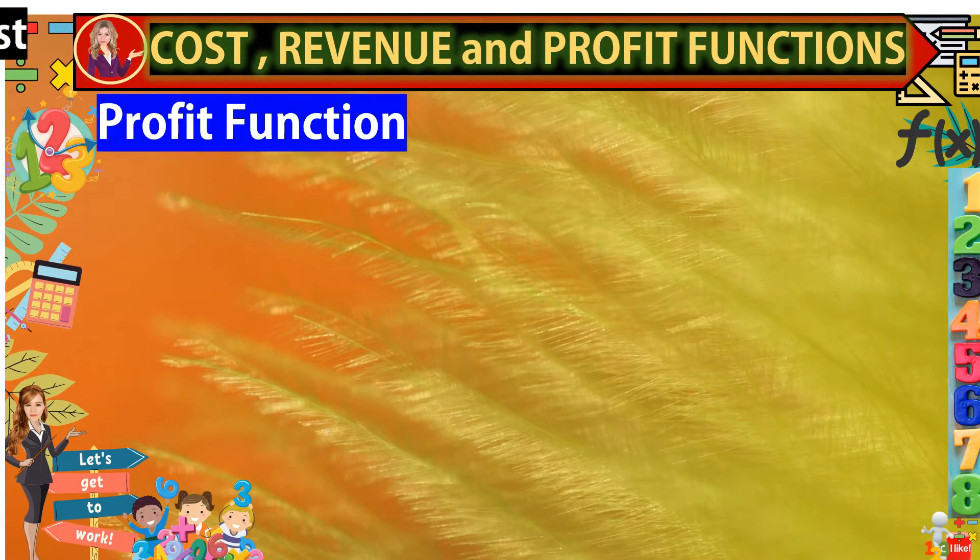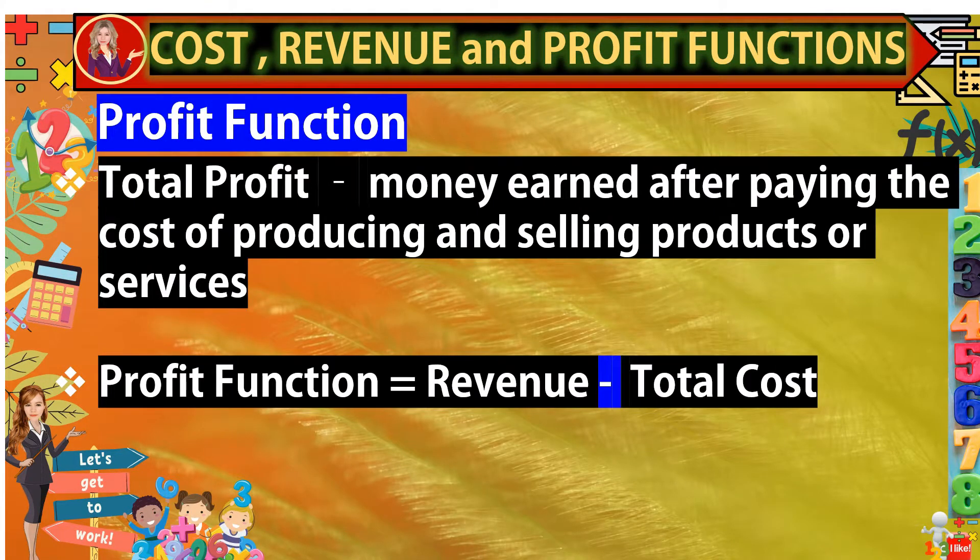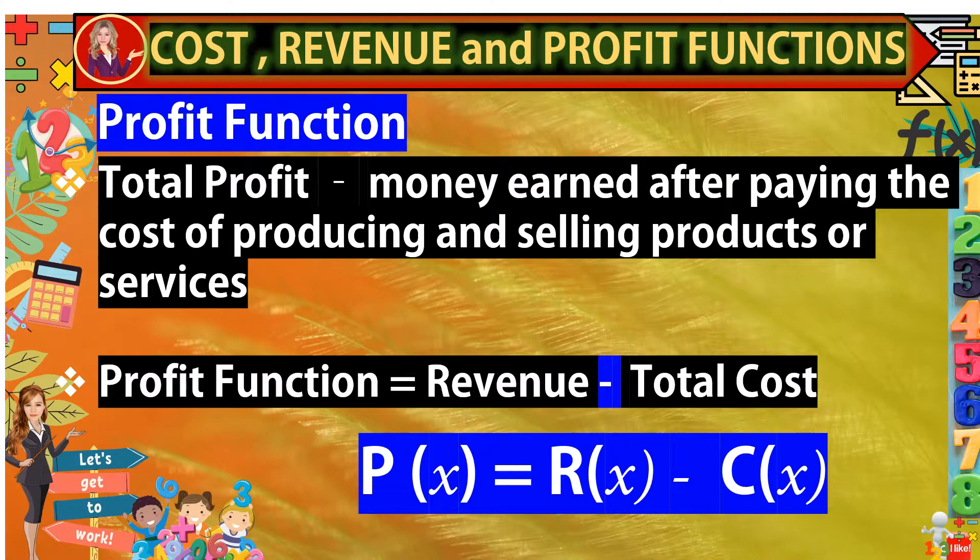Profit function. In profit function, we have a total profit. It is the money earned after paying the cost of producing and selling products or services. And to get the profit function, you will just have the revenue function minus the total cost. P(x) is equal to R(x) minus C(x). With this, let us now apply the three concepts.